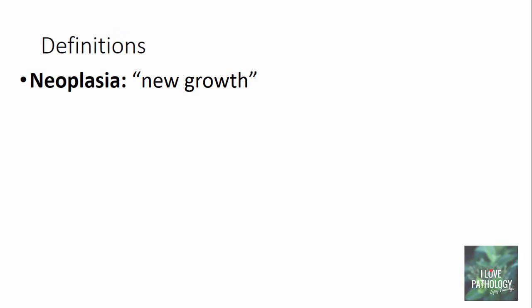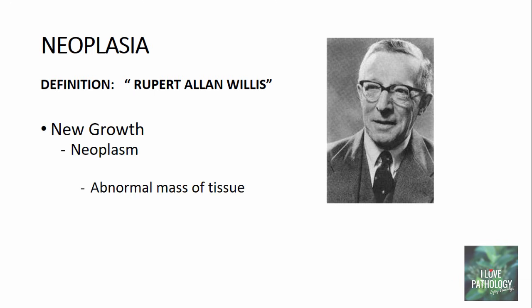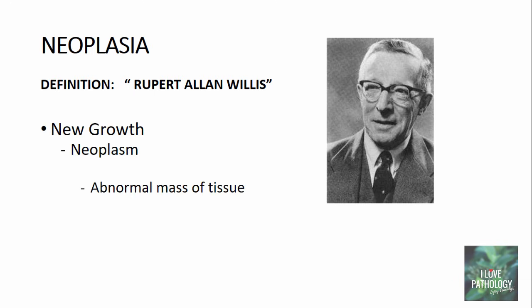So now we know that neoplasia means new growth, and tumor is just a word used to describe any swelling. Coming to the definition of neoplasia, it is really very difficult to define. One definition comes closest to understanding the concepts of neoplasia, and that was given by Rupert Allan Willis, who was an Australian pathologist. He described a neoplasm as an abnormal mass of tissue, the growth of which exceeds and is uncoordinated with that of normal tissue, and then it persists even after the cessation of the stimuli which evoked that change.